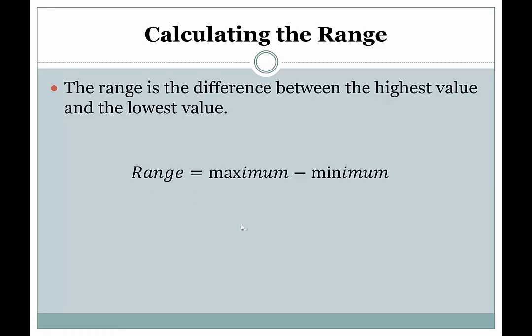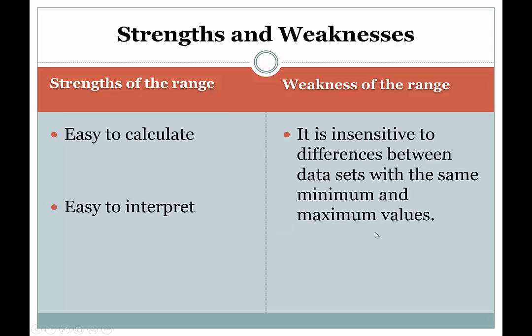And if you think about the range as a calculation, you would have to say the calculation is pretty simple. So what are the strengths and weaknesses of this measure of dispersion? I would say the strengths of the range is that it's easy to calculate as we just saw. Just subtract two numbers. And it's very easy to interpret. Everyone kind of understands what's happening here.